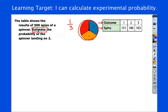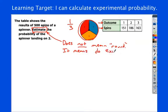Estimate does not mean round when you're talking about probability. Let's write this down. Does not mean round. It means do experimental probability. It's called an estimate because it's not necessarily, the theoretical is thought of as like the exact. But we all know real life isn't always exact. So, that's why we call experimental an estimate. So, experimental probability.